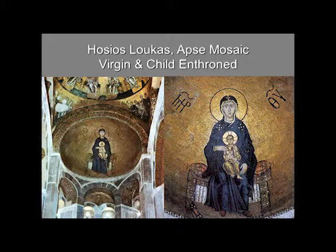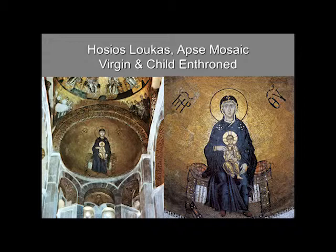Byzantine art wants to be the true image, so there are established types for showing Mary — you can't just invent what Mary looks like, you have to follow the correct types, though there are variations. Comparing the two images, the length of the face looks a bit different; this one is more stylized and simplified than the image at Hagia Sophia, and Christ is in a slightly different position. But essentially you have a frontal image of Mary, her body enclosing the Christ child, shown in beautiful gold against her rich blue robes, enthroned on the Byzantine-type throne with what's called a poofy pillow.